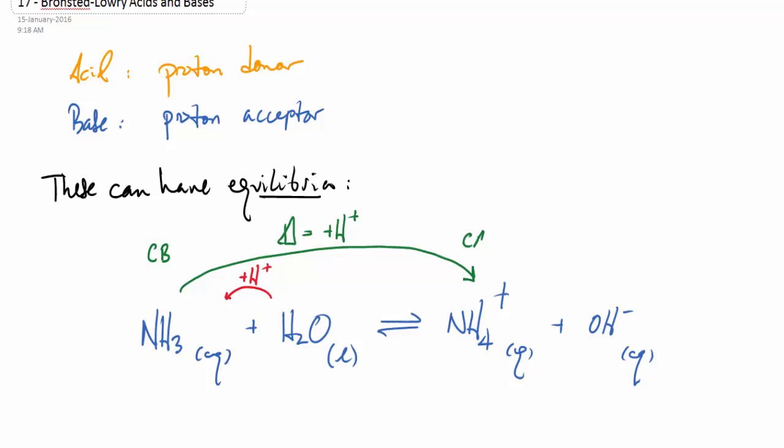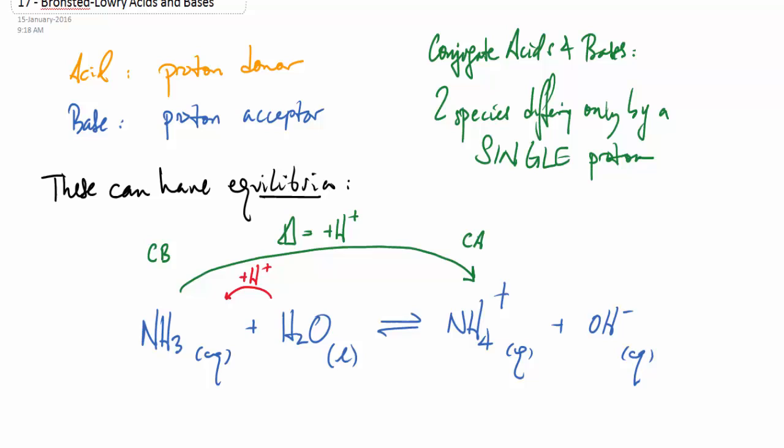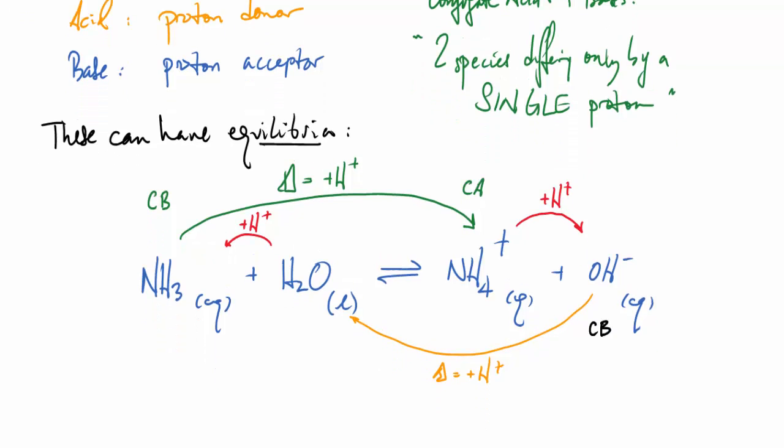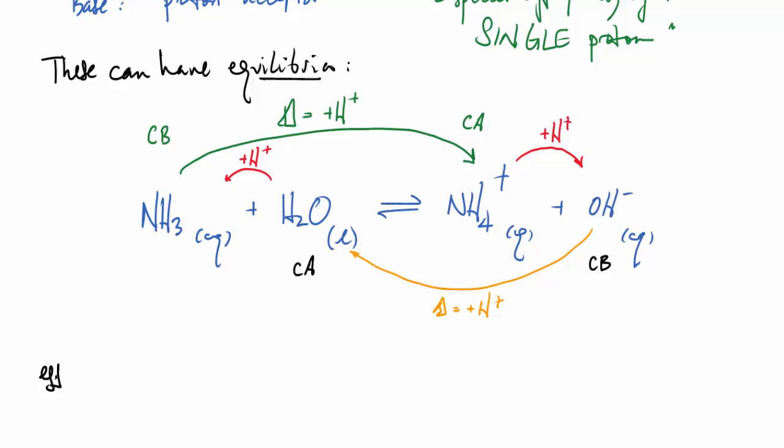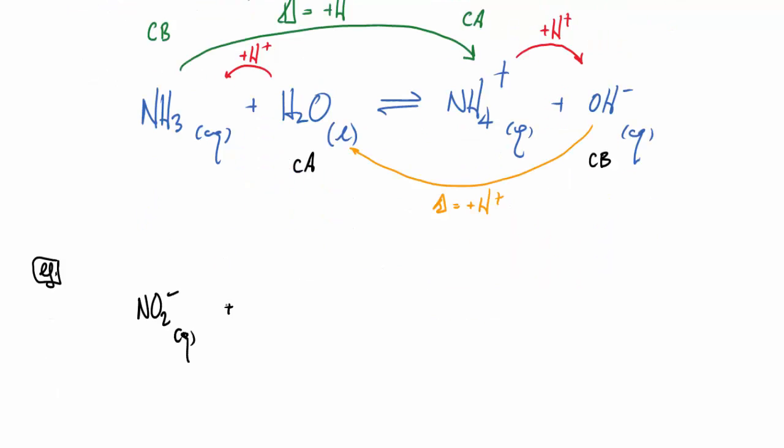Notice that ammonia, if you add one proton to it, makes it ammonium. And this pair of components, one base, one acid, differing by a proton we call a conjugate acid-base pair. Two species differing only by a single proton. Notice that hydroxide ion and water are also a conjugate acid pair because hydroxide ion can get that proton from ammonium. So here we have two conjugate acid-base pairs in this reaction.